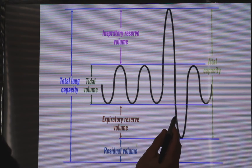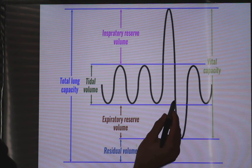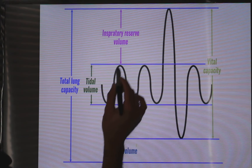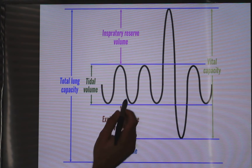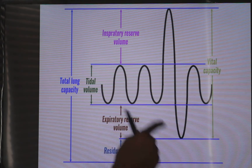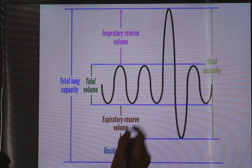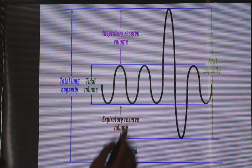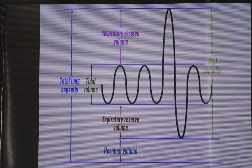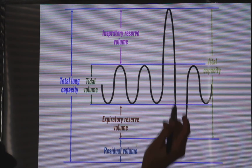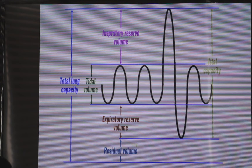With age, the closing capacity increases while the functional residual capacity is not significantly affected by age. So over time, the closing capacity rises toward and eventually exceeds the functional residual capacity.